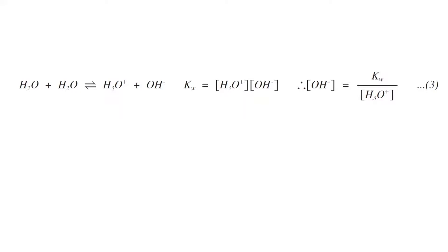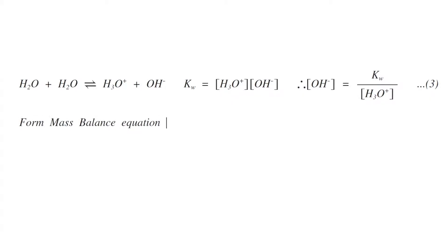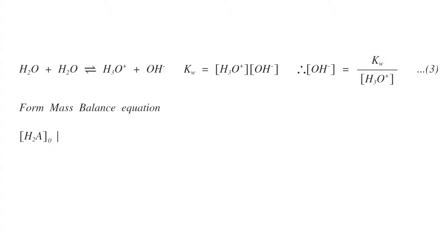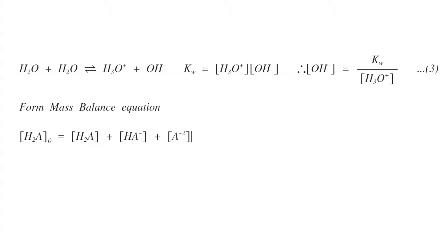From the mass balance equation, [H2A]₀ must equal [H2A] plus [HA⁻] plus [A²⁻], where [H2A]₀ is the initial concentration of the acid, [H2A] is the undissociated concentration, and [HA⁻] plus [A²⁻] represents the concentration of the dissociated forms.